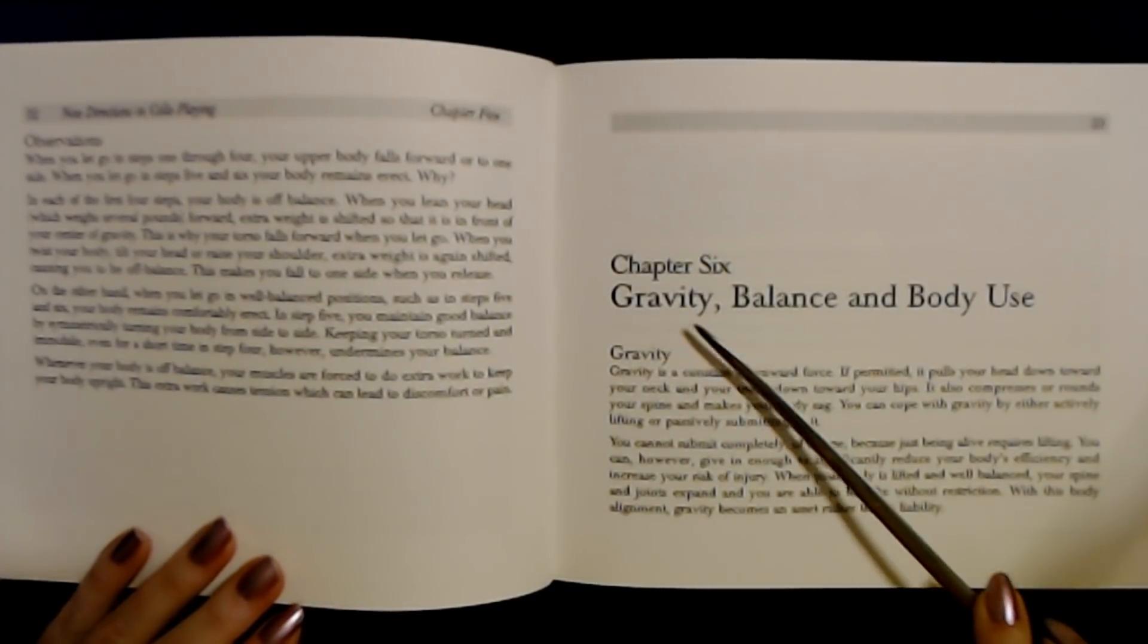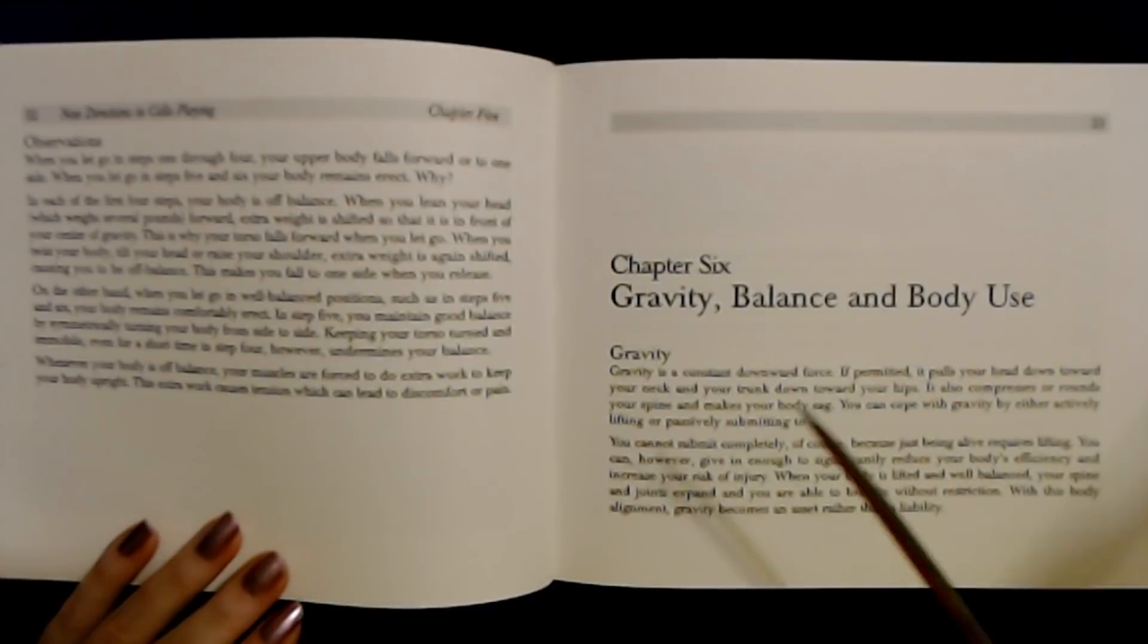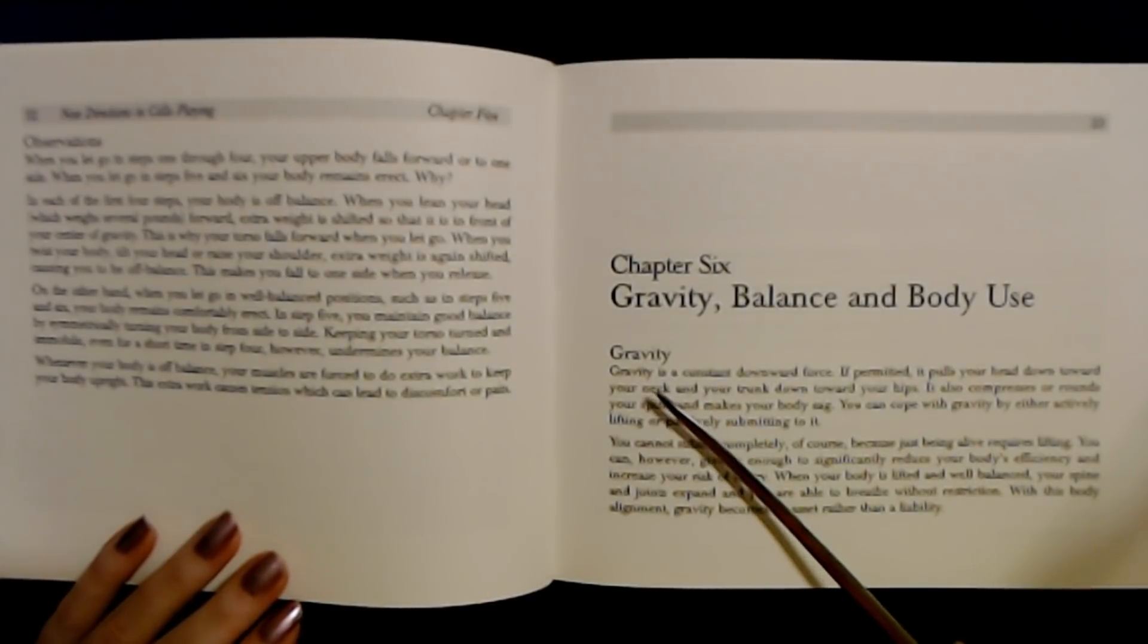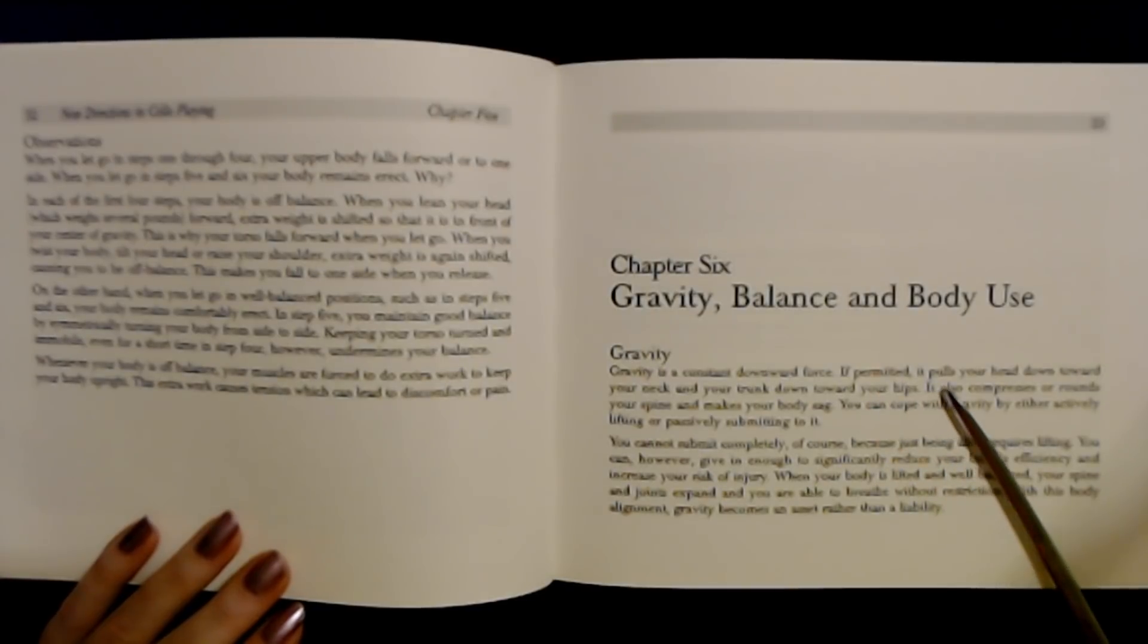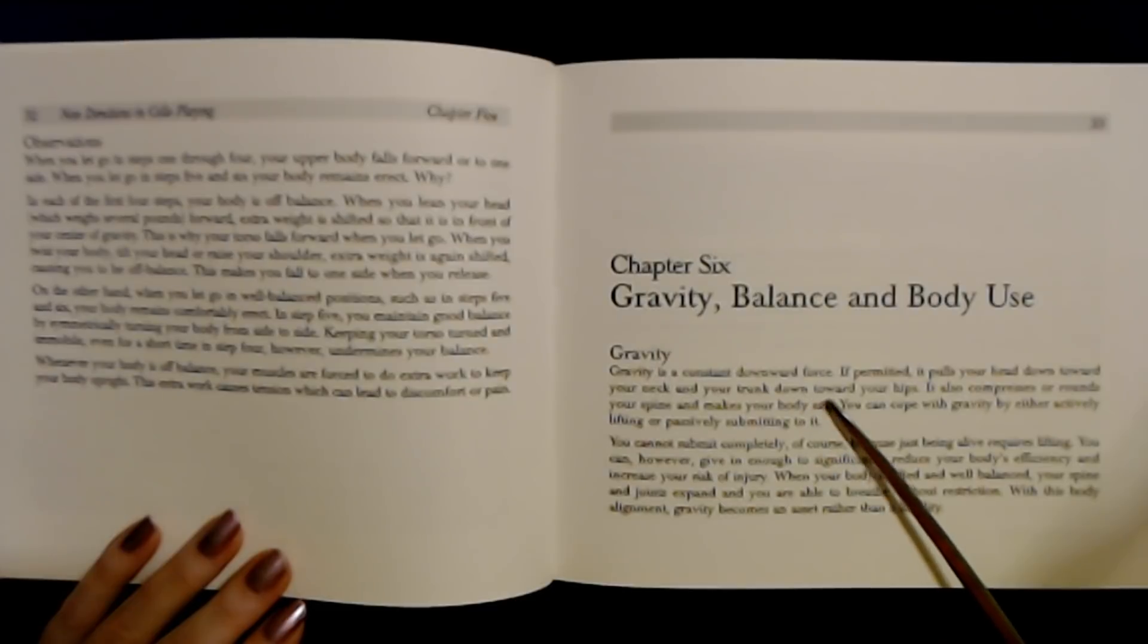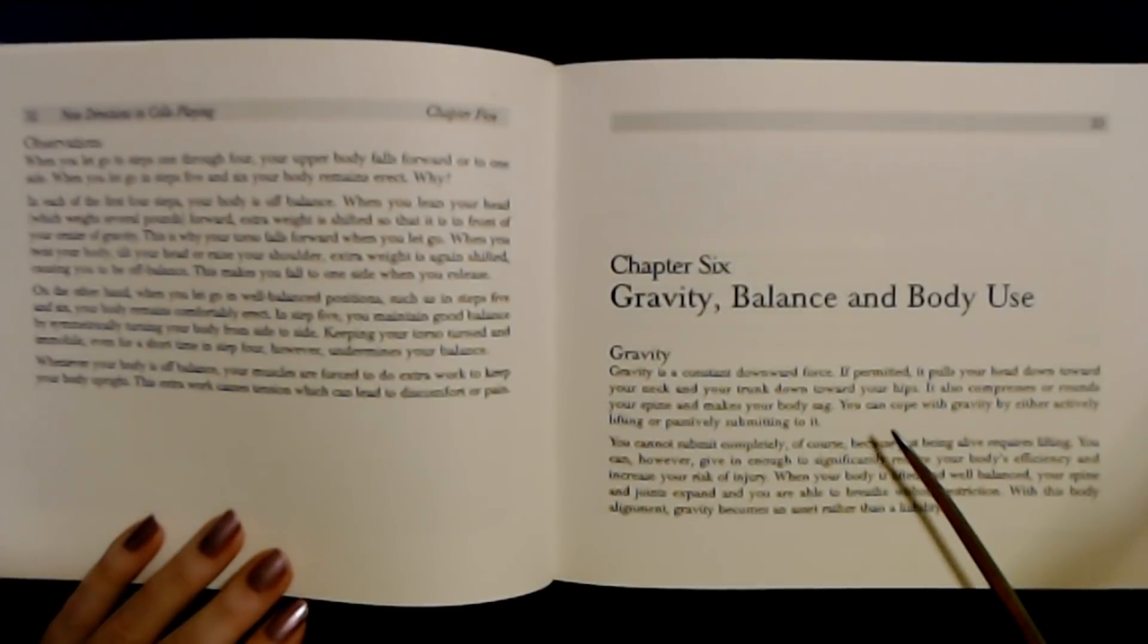Chapter 6. Gravity rounds the body. Gravity. Gravity is a constant downward force. If permitted, it pulls your head down toward your neck and your torso down toward your hips. It also compresses or rounds your spine. It makes your body sag. You can cope with gravity by organically lifting, or passively submitting to it.